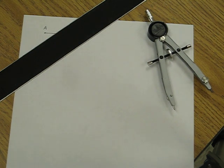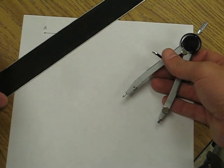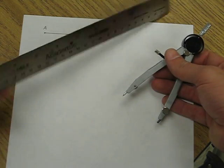In this construction we're going to learn how to construct a congruent segment. What you'll need is your compass and a straight edge. A ruler will do fine.